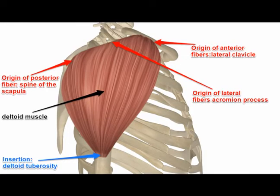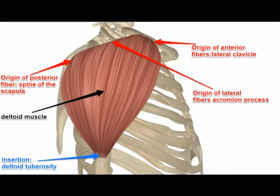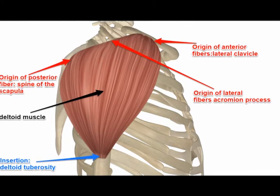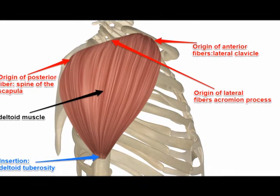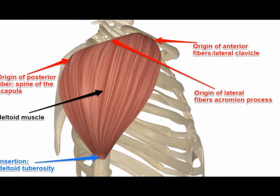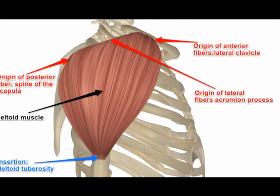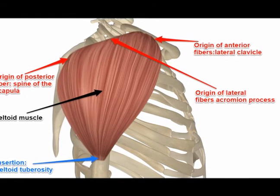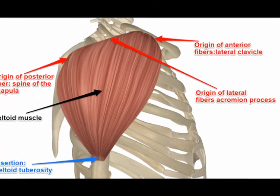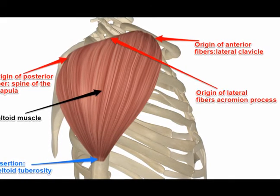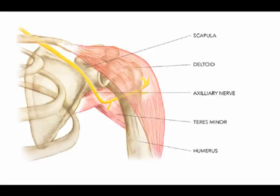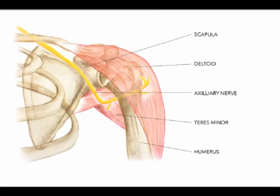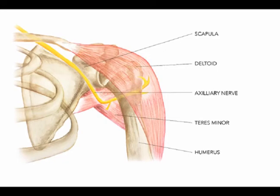So again, the origin of the anterior head of the deltoid is the lateral aspect of the clavicle. The origin of the middle head of the deltoid is the acromion, and the origin of the posterior head is the scapular spine. The insertion of all three heads is on the deltoid tuberosity, and all three heads are innervated by the axillary nerve from vertebral levels C5 and C6.